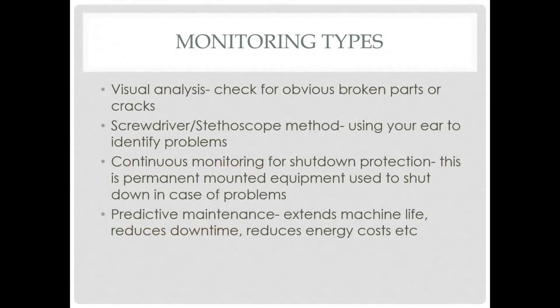Different monitoring types include visual analysis — checking for obvious broken parts or cracks — and the old screwdriver stethoscope method: put the handle against your ear, touch the other end to different parts of a motor, and it amplifies localized sounds to help determine where problems are. Continuous monitoring is used for shutdown protection — permanently mounted to equipment to shut it down in case of problems — and also strongly used for predictive maintenance to extend machine life, reduce downtime, and reduce energy costs.